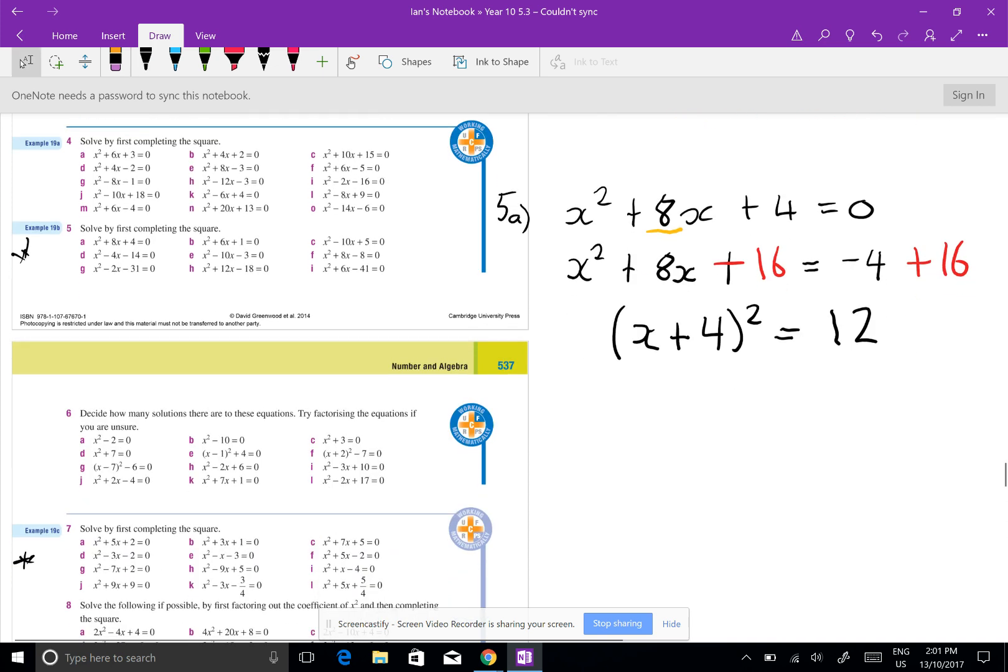Now I can just square root both sides, but remember when I square root I get two answers, I get the positive and the negative. So I get positive and negative root 12. Now I have to get rid of that 4, so I'm minus a 4, and I get x equals negative 4 plus or minus root 12.